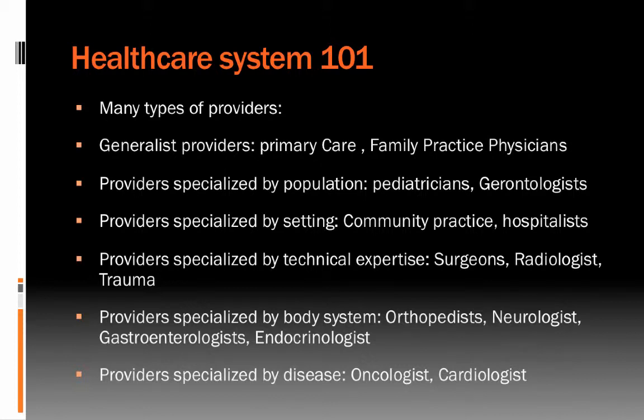There are also providers who are specialized by their technical expertise — surgeons, radiologists, or people who focus on trauma. There are providers who specialize by a body system: orthopedists who focus on bones and joints, neurologists who focus on the brain and the nervous system, gastroenterologists who focus on the digestive system, or endocrinologists who focus on the endocrine system. And of course there are providers specialized by disease or disease state, like oncologists who focus on cancer, or cardiologists who focus on the heart and circulatory system.